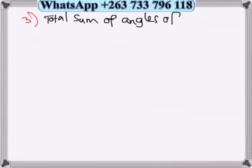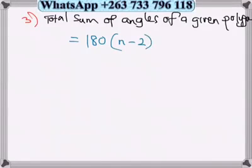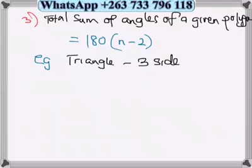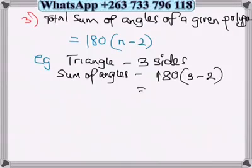Let's look at the third concept: total sum of angles of a given polygon. It is given by the formula 180(n-2). So for example, the triangle has 3 sides. So the sum of angles is 180(3-2), which is 1. So 1 times 180 is 180 degrees.